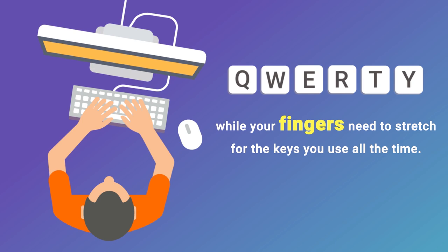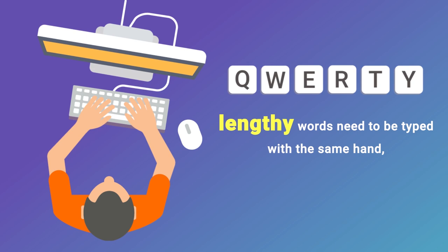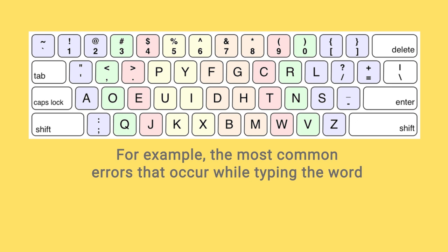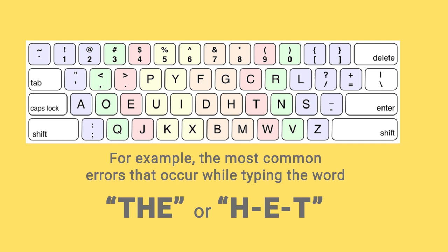Also, in certain cases, lengthy words need to be typed with the same hand, and it often moves from the home row. This decreases the speed and efficiency of the user. The Dvorak keyboard was designed to prevent errors while typing. For example, the most common errors that occur while typing the word THE are TEH or HET. This is mainly because the keys alternate badly in the QWERTY keyboard, causing you to type outward rather than inward.